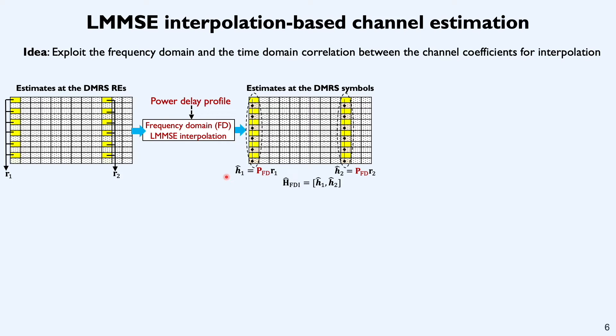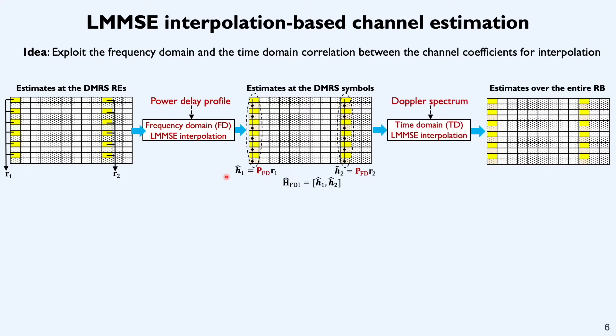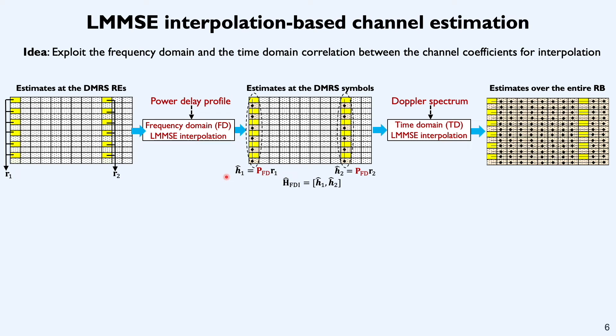After this stage, time domain interpolation can be done by exploiting the correlation in the channel coefficients across the time dimension. At the end of these two stages, we end up with the channel estimates over an entire RB which is collected in this matrix h hat interpolate.